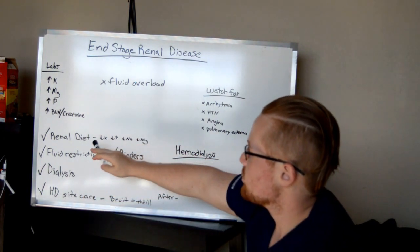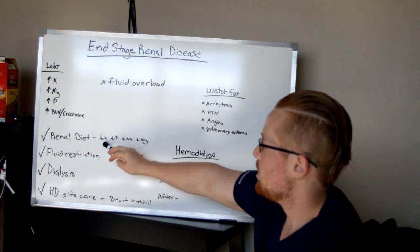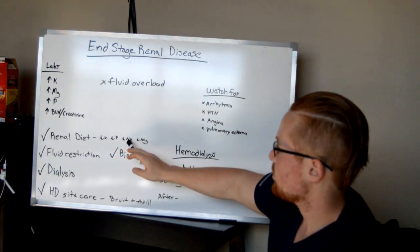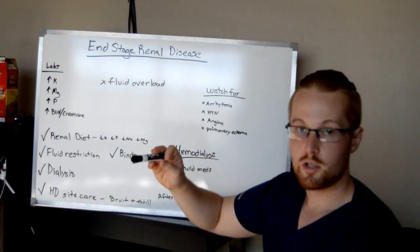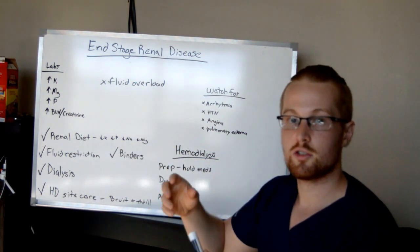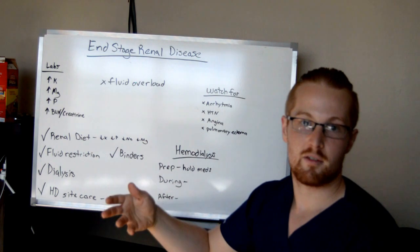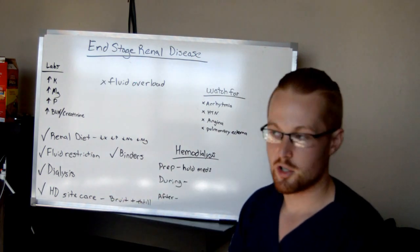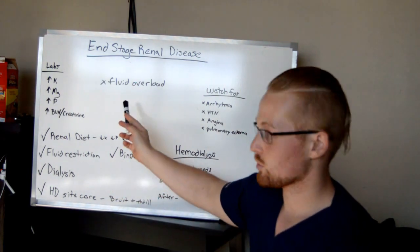So, for these patients, you'll want to have them on a renal diet, which is low in potassium, phosphorus, sodium, and magnesium. Sodium because sodium and water go together. So if they have lots of sodium in their diet, they're going to have more fluid staying in their bloodstream, and it's going to put them at a higher risk of fluid overload.